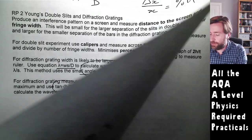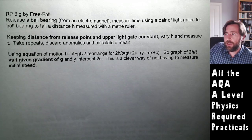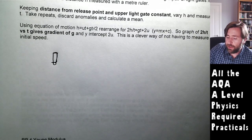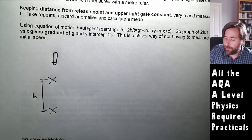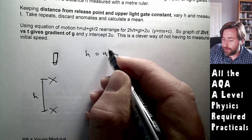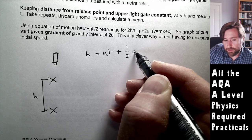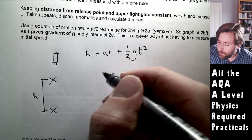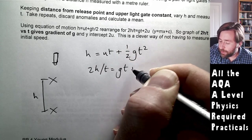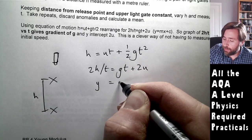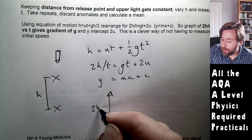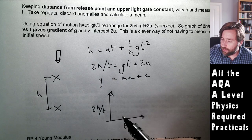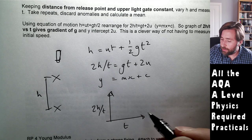Required practical three is g by freefall. You release a ball bearing from an electromagnet, and between two light gates you measure the distance h. Using the equation of motion s equals ut plus half-at-squared, you rearrange to get 2h over t equals g·t plus 2u. This is y equals mx plus c form, so plotting 2h/t on the y-axis against t on the x-axis gives a gradient of g and an intercept of 2u.